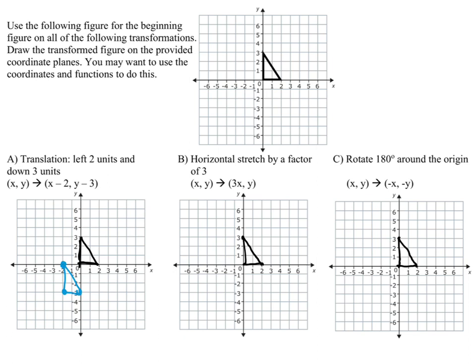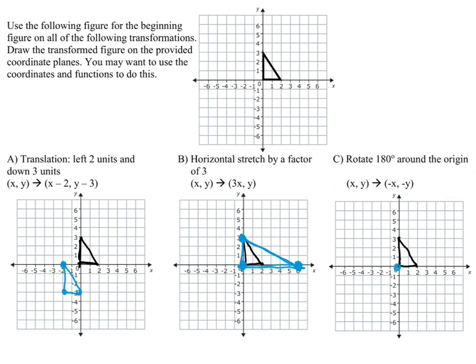Let's check how things went. The first one — left two, down three — easy. The second is a horizontal stretch by a factor of three: all the y-values stay the same, but all x-values get multiplied by three. So a point at x=2 moves to x=6, giving a wider shape. The third, rotate 100 degrees around the origin, should be straightforward.